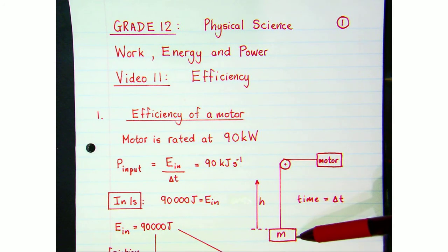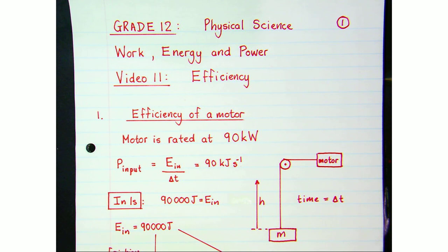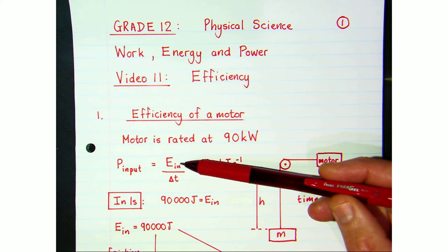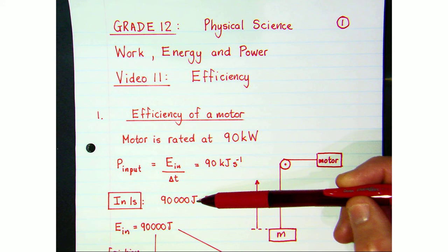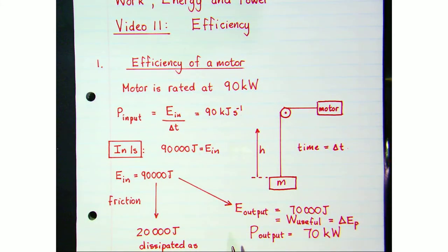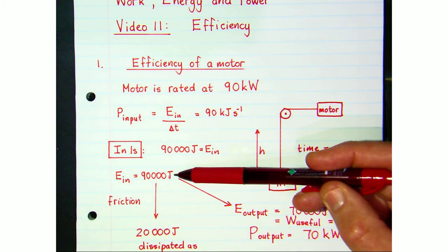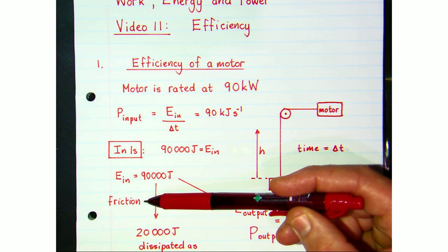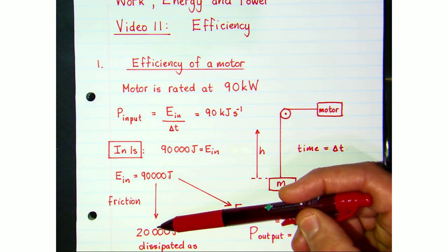We install this motor because we want to lift — for example, get the motor to lift concrete slabs through some height h in some time Δt. The input energy into the system in one second is 90,000 joules, but in reality not all of that 90,000 joules will go to useful work done. Through the moving parts of the motor there's going to be a lot of friction and we're going to lose energy.